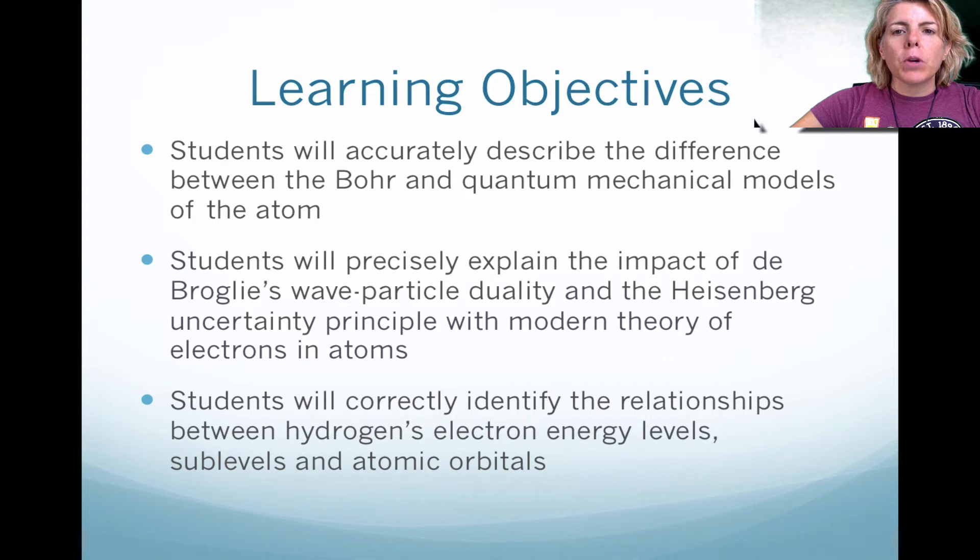So today in this video, we're going to describe the difference between the Bohr and the quantum mechanical models of the atom. Then we're going to explain the impact of de Broglie with his wave-particle theory and Heisenberg's uncertainty principle, what kind of effect it had on the modern theory of the atom. And then we're going to look at hydrogen's electron energy levels, sublevels, and discuss atomic orbitals.